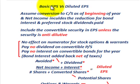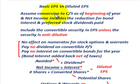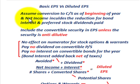We're going to look at basic earnings per share versus diluted earnings per share. For diluted EPS, we assume that the convertible securities are going to be converted into common stock as of the beginning of the year, and we look at net income as of the end of the year.